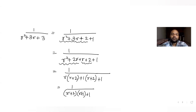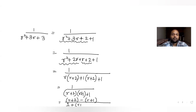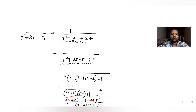So the expression becomes 1 upon (r+2)(r+1) + 1. I then rewrite the numerator as (r+2) minus (r+1), so the expression becomes (r+2 − r−1) upon 1 + (r+1)(r+2). Since the numerator simplifies to 1, that confirms the manipulation is correct.